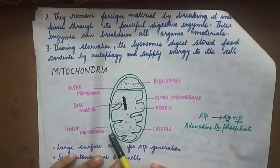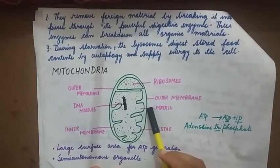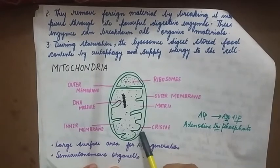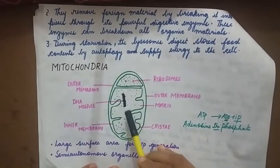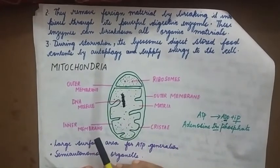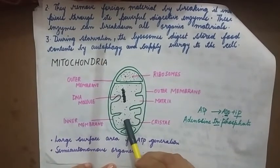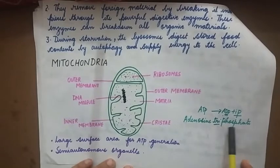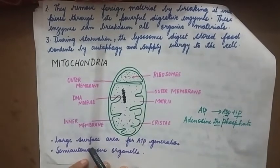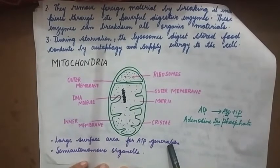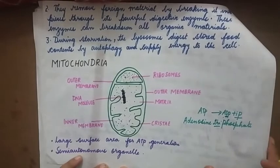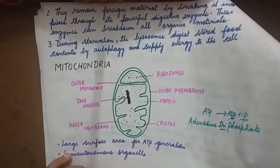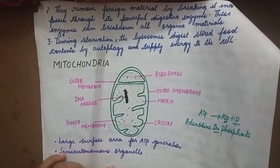Moving on to mitochondria — it is a double membrane structure with an outer membrane and an inner membrane that is thrown into foldings known as cristae. Mitochondria have the presence of DNA and ribosomes, so they can partially synthesize their own protein. They are known as the powerhouse of the cell because they produce ATP — adenosine triphosphate — also known as energy currency. The inner membrane provides a large surface area for ATP generation. Mitochondria are semi-autonomous organelles because they can partially synthesize their own protein. Notably, chloroplasts are also semi-autonomous organelles.